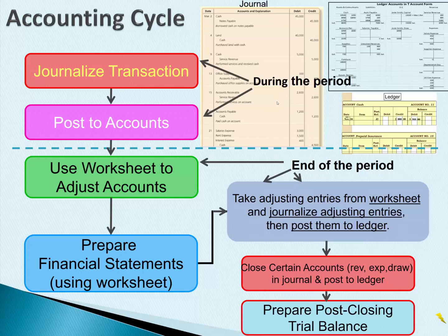Then we're going to post those closing transactions to the ledger. When we're done with the closing entries, we're going to prepare a post-closing trial balance — post-closing just means after closing. We take our balances from our ledger — in this example, cash has a balance of $5,900 — and we post any account that has a balance on the trial balance. Then we check that debits equal credits.